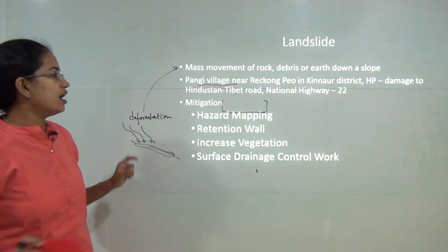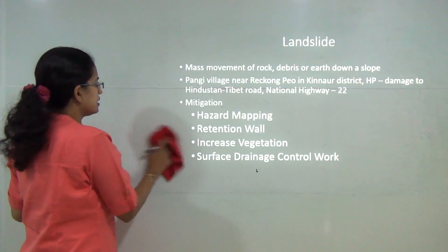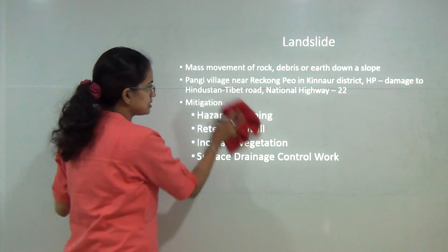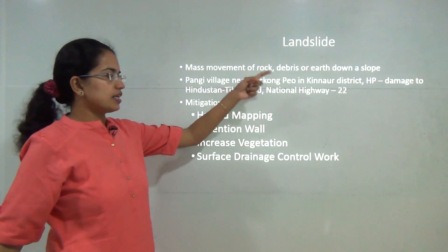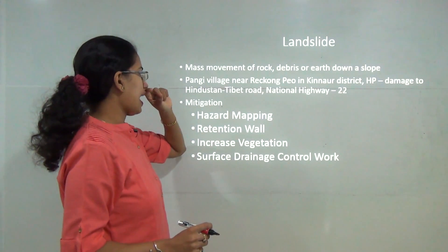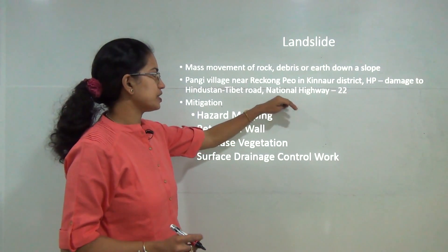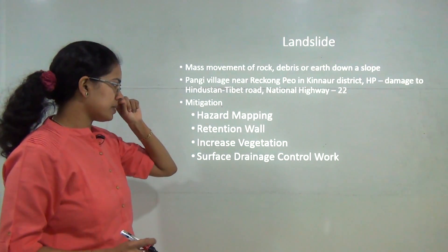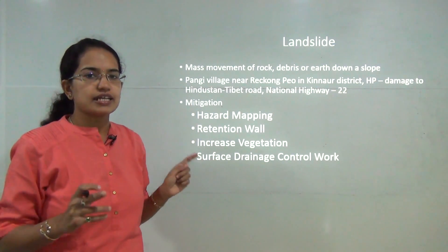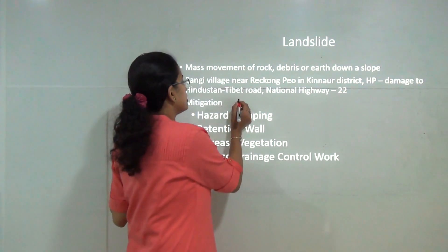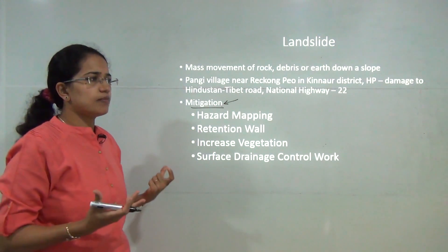The NCERT material mentions a case study of a landslide at Rikong Pew, near Kinnaur district in Himachal Pradesh. A severe landslide damaged National Highway 22 and the Hindustan-Tibet Road. Mitigation of landslides is important, and many students face difficulty explaining specific measures for landslides, unlike floods or droughts.